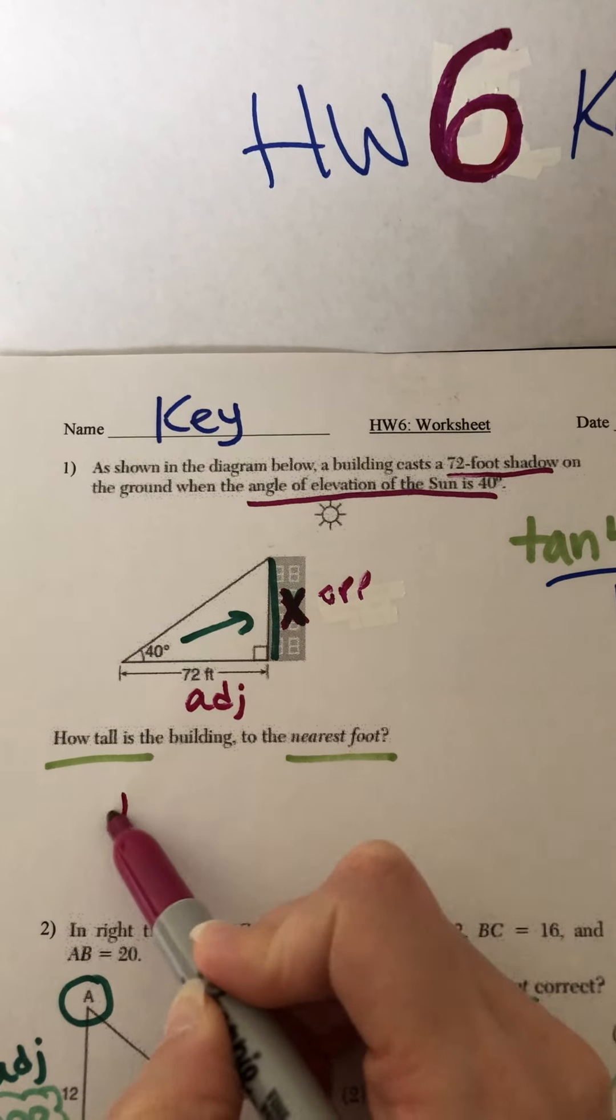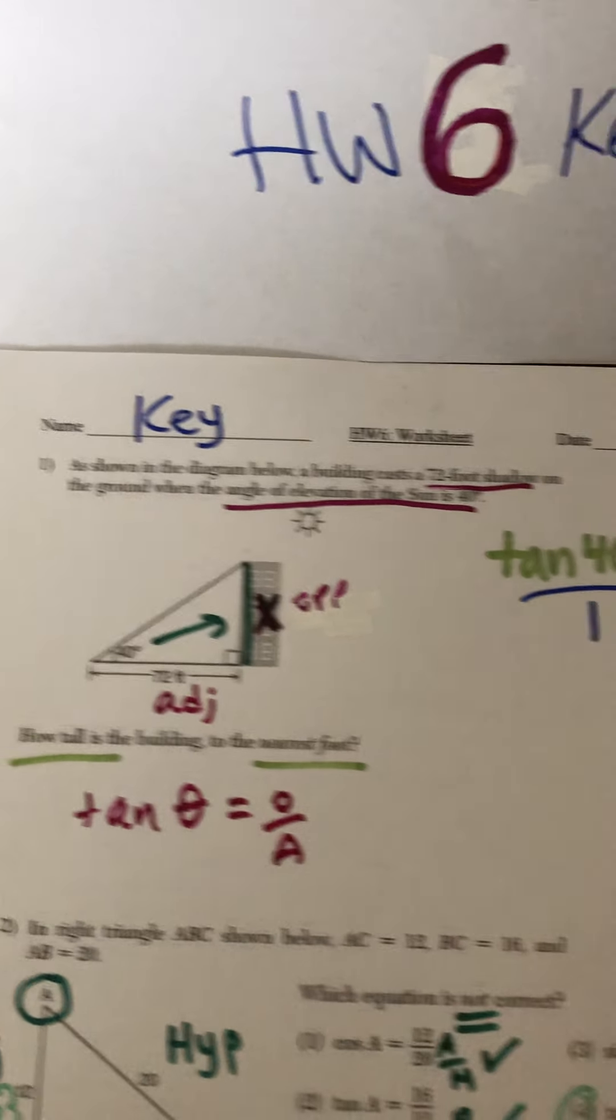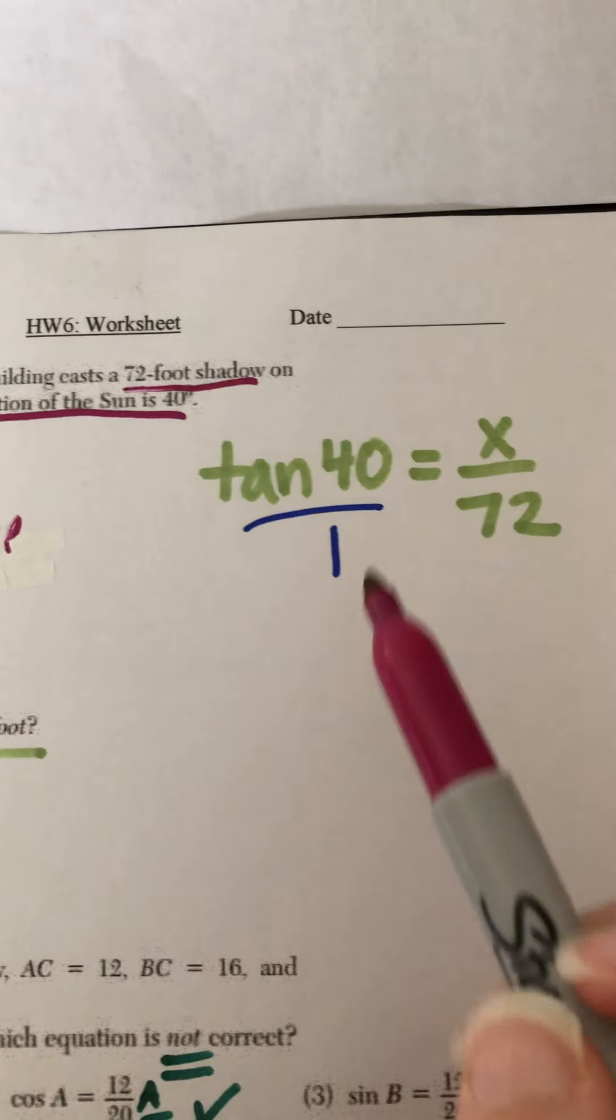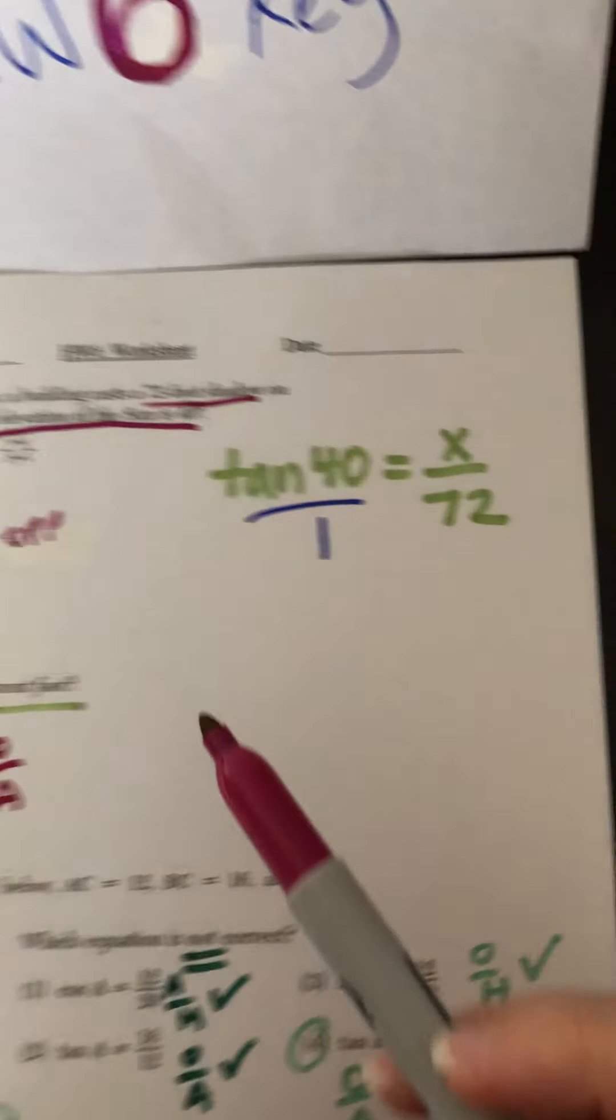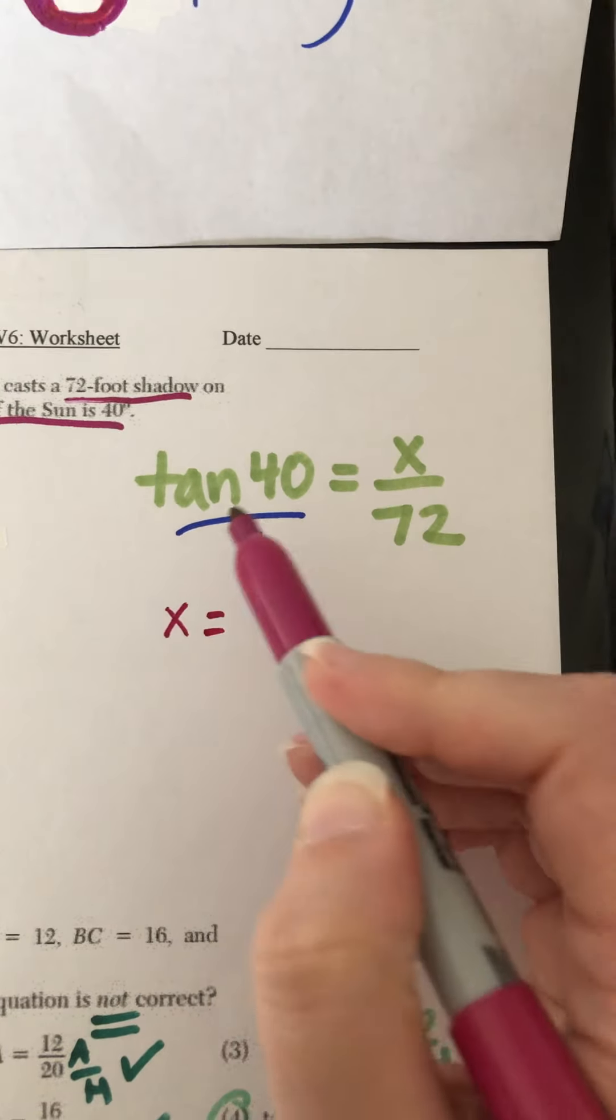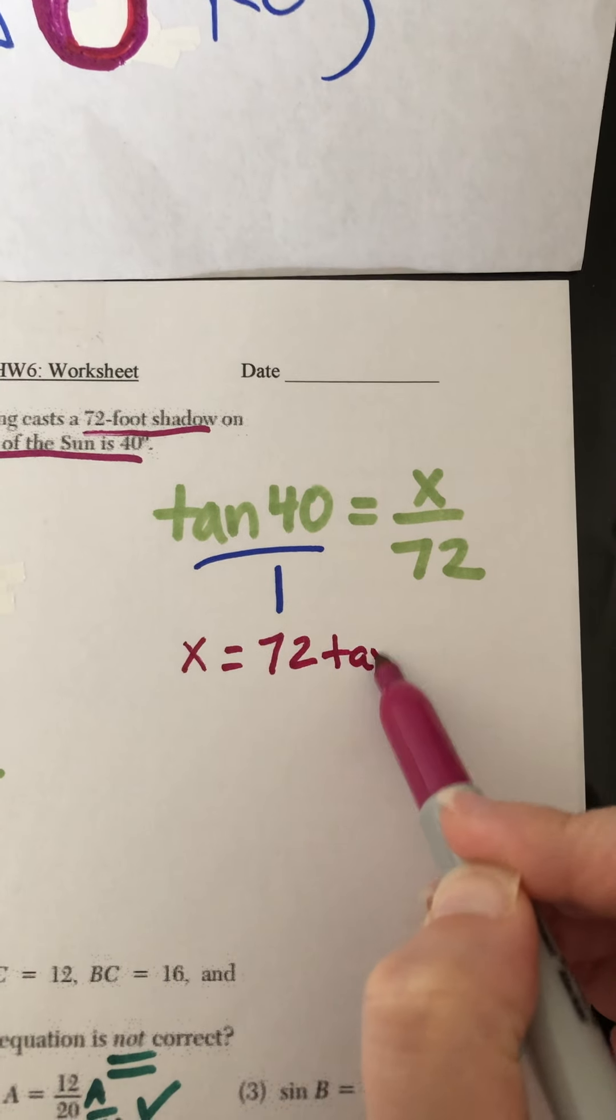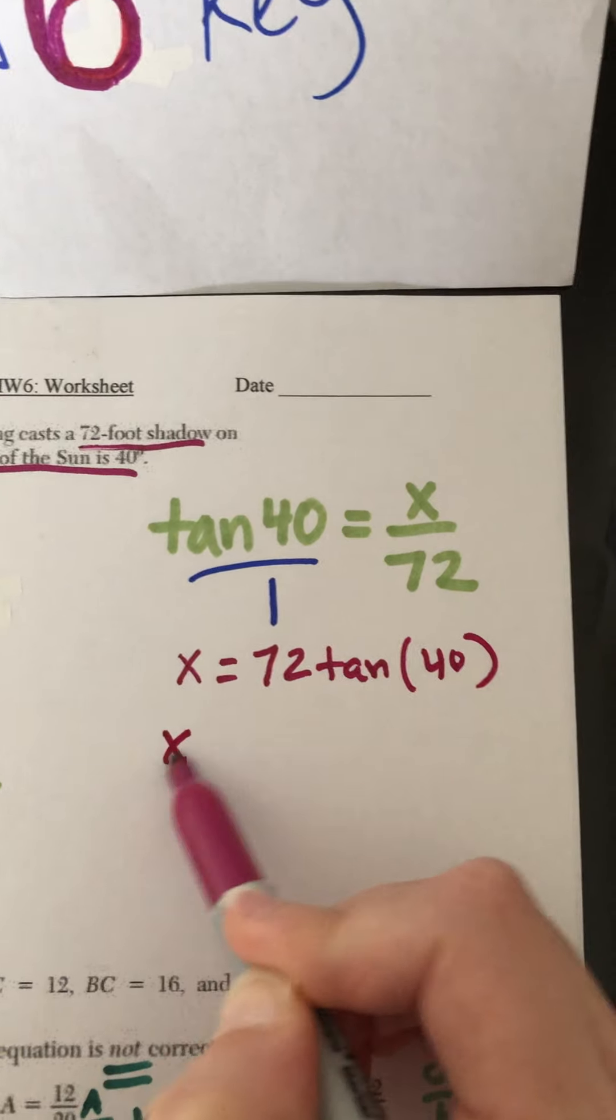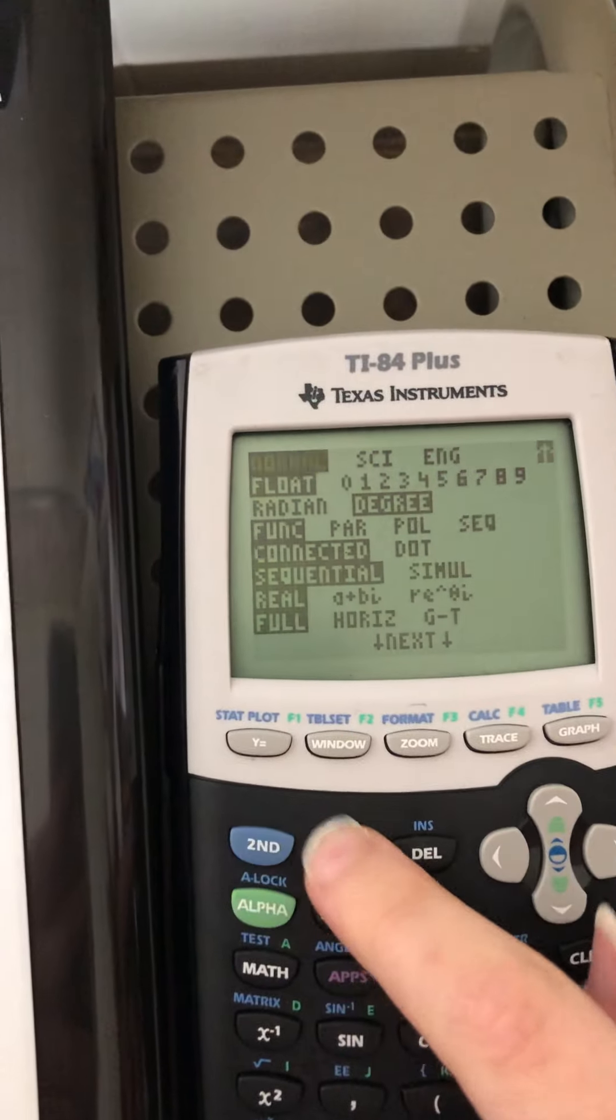That means we're doing tan. Tan of some angle theta is opposite over adjacent. Now I've already written down over here tan 40 from the 40 degree angle is opposite x over adjacent 72. And now we have to cross multiply. 1 times x is x. Tan 40 times 72. Put the 72 in front, then the tan 40. And then we should go to our calculator. Make sure our calculator is in degree mode. I'm good to go.